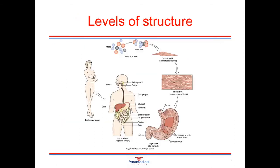The human body is highly complex and made of many different levels of structure. Starting at the most basic level, our body is made up of trillions of different types of atoms. These atoms join together to form many types of molecules, which join together to form all the different types of cells. Our cells, when organized together, create different types of tissues, and our tissues create the different types of organs. Organs join together to form organ systems, and when all these organ systems are working in harmony, they create the human organism.